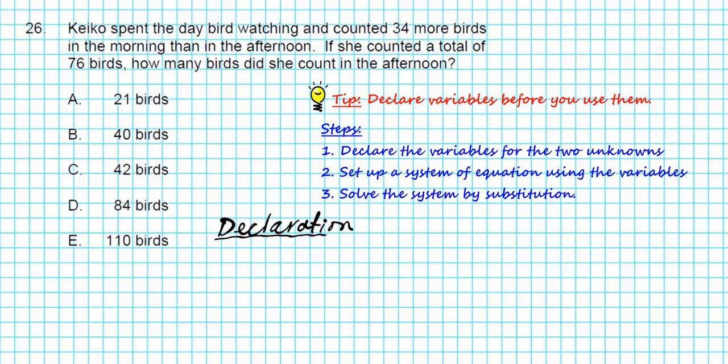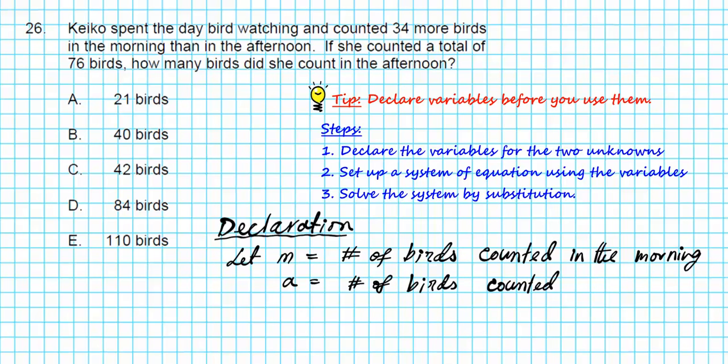There are two unknowns in this problem: number of birds in the morning and number of birds in the afternoon. Let M be number of birds counted in the morning, and let A be the number of birds counted in the afternoon.